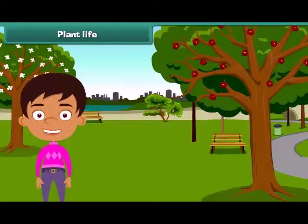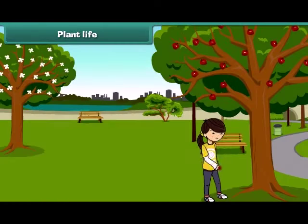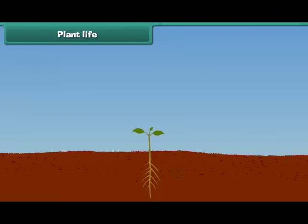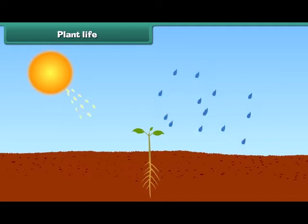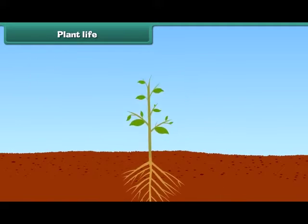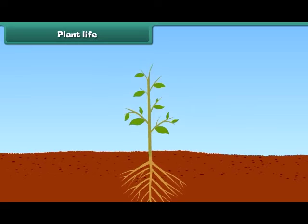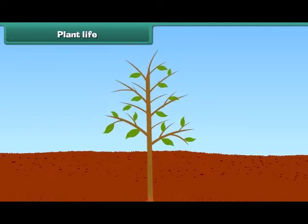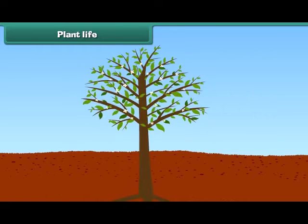Hello friends, I am Sam. Do you know that plants are also our friends as they give us food and many other useful things? Besides this, they also give us shade. They are also living like us. They need their own food and water to live and grow, and they also have the ability to grow and become tall like us.